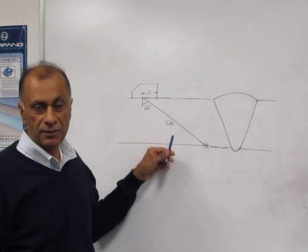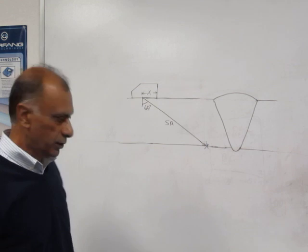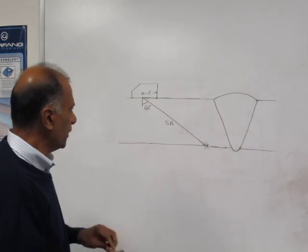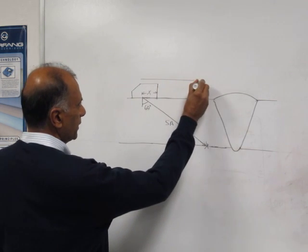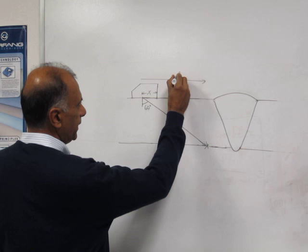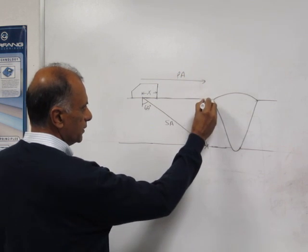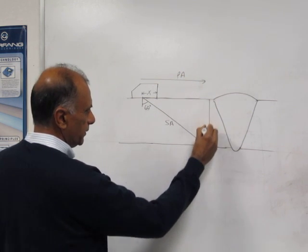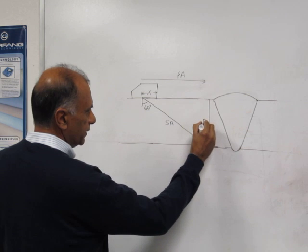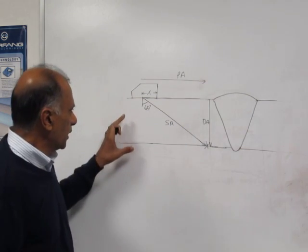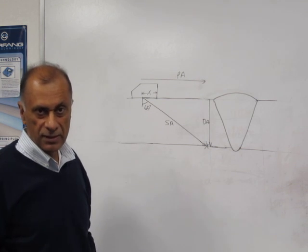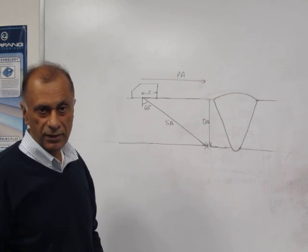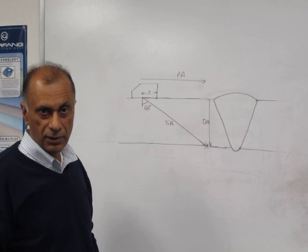...and the sound path, we can compute the distance from the exit point to the flaw, from here to there, which we call PA, and the depth of the flaw, from here going down, which is DA. The PA and DA are now computed directly by modern UT instruments, making inspections much simpler.